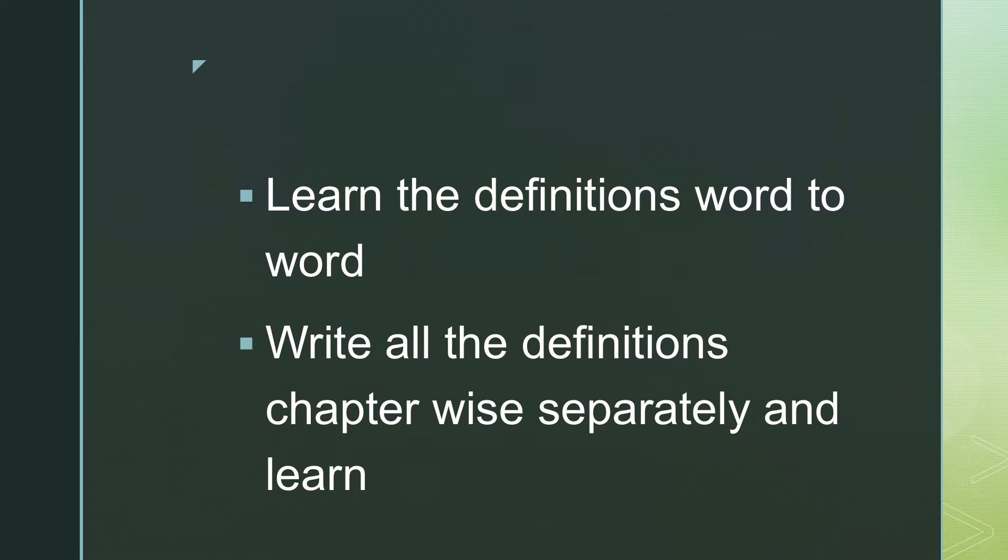So please learn the definitions properly. I will suggest to write all the definitions chapter-wise separately and then learn. Take a separate notebook, give the heading 'Definitions, Chapter Number One', write the name of the chapter, write all the definitions. In cell division, mostly I think five or six definitions will be there. Just jot down those, come to the next chapter, genetics laws, write down. Then when you sit for an exam or when you are revising for an exam, this type of preparation is going to help you a lot.